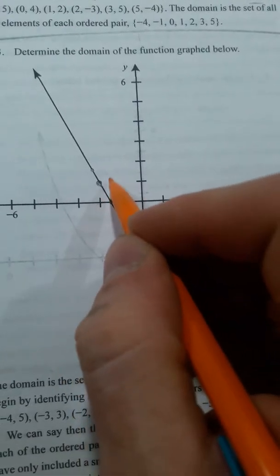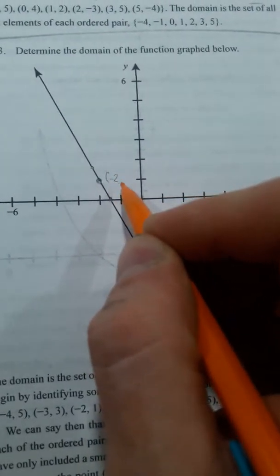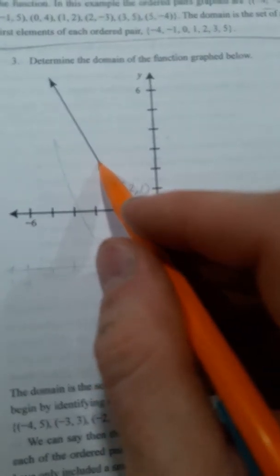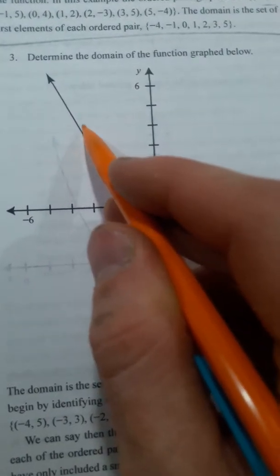And I can find the ordered pair for that, which would be negative 1, negative 2, and then positive 1 for y. But you'll notice that I can take points like everywhere on this line. Tons of points.